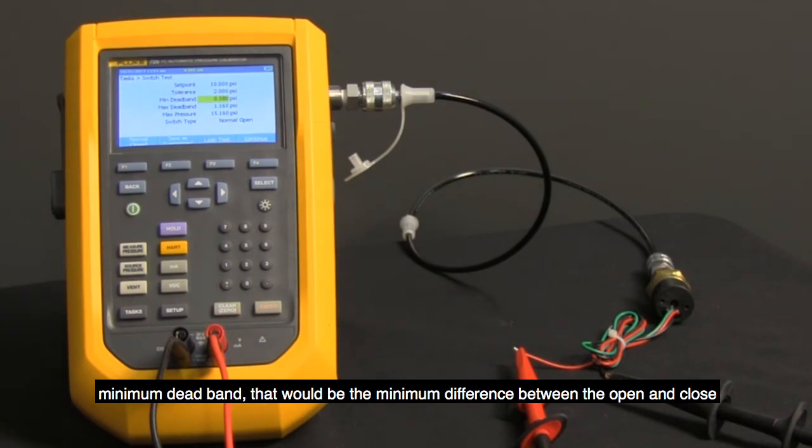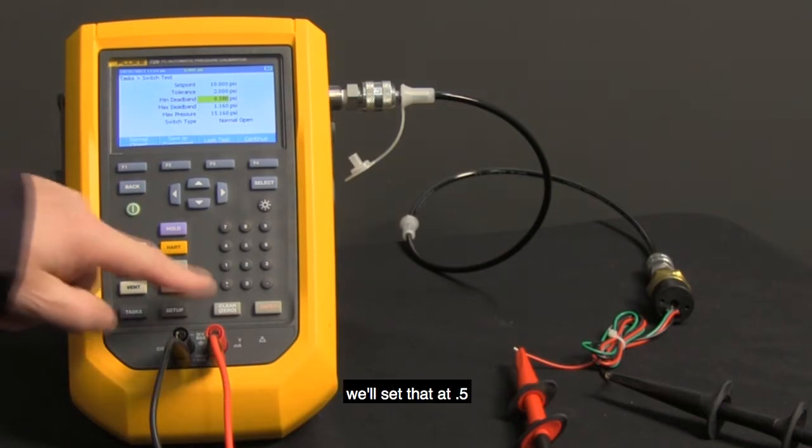Minimum deadband, that would be the minimum difference between the open and close. We'll set that at 0.5.